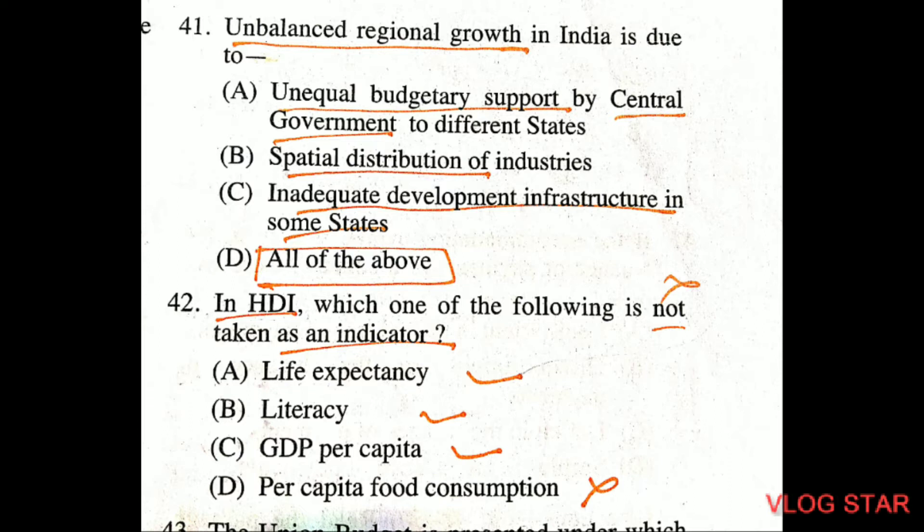Question number 42: in HDI, which one of the following is not taken as an indicator? Per capita food consumption is not an indicator of HDI. The indicators are life expectancy, literacy, and GDP per capita.